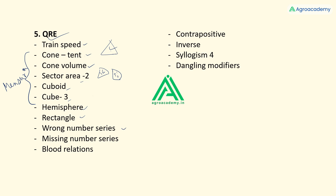The wrong number series given was: 5, 7, 11, 14 — and the missing number series was: 4, 9, 16, 25, 36. Both were very easy level. If you had good preparation for a preliminary exam, you would have found all these questions very easy. There was also one blood relation question which was also easy.